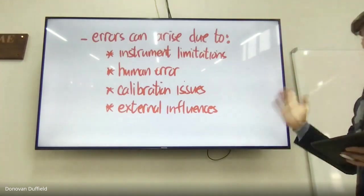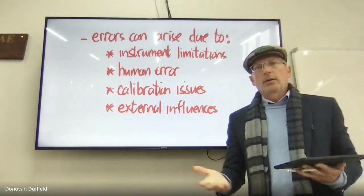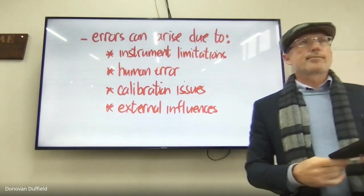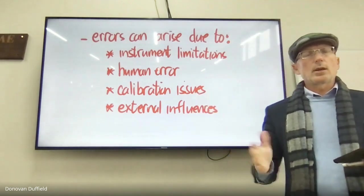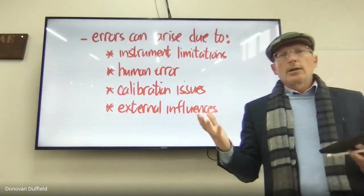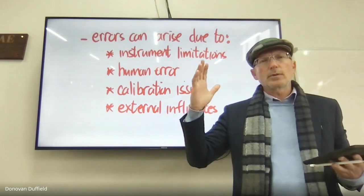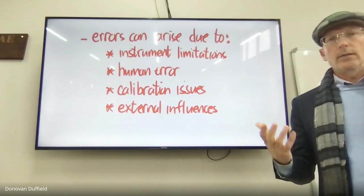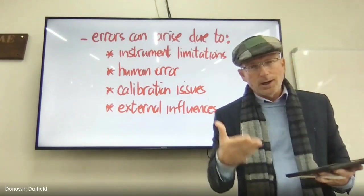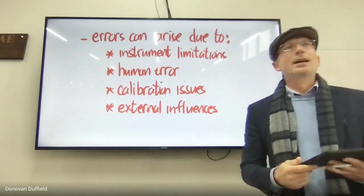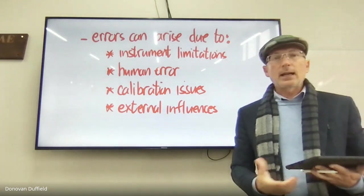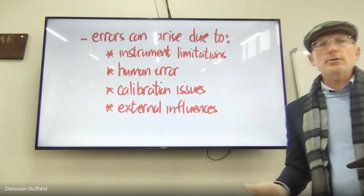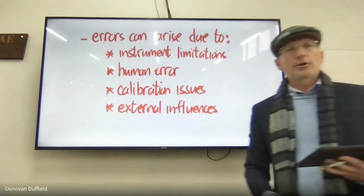Errors can arise due to instrumentation limitations — in a school lab we often don't have state-of-the-art equipment. There's also human error: reaction times, parallax errors, poor eyesight. Calibration issues arise if the measuring instrument hasn't been calibrated properly. And external influences like unaccounted temperature or pressure changes also contribute to errors.